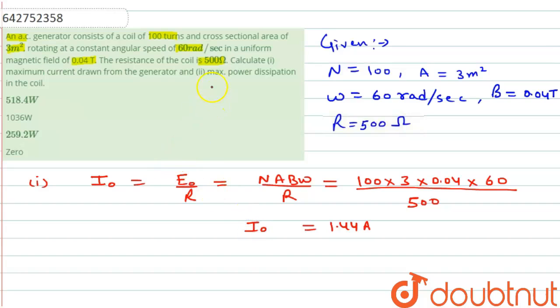In the second case, we have to calculate the maximum power. Maximum power dissipation will be equal to E_RMS times I_RMS, which is equal to E₀ by root 2 times I₀ by root 2.